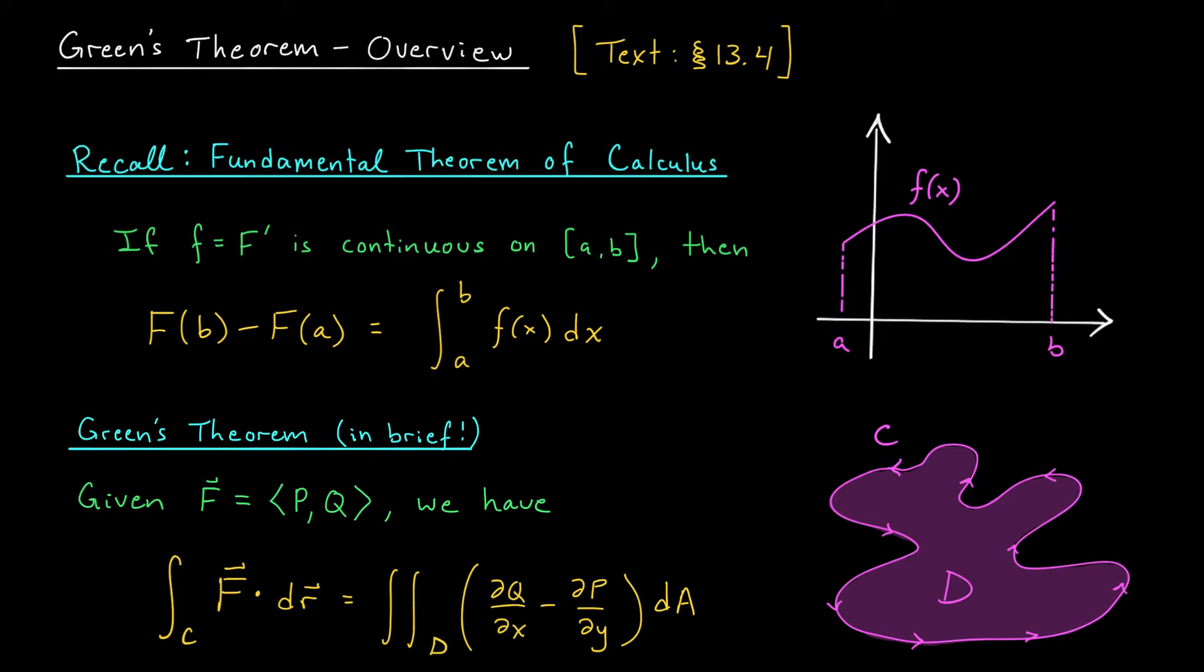Whereas on the right-hand side, its derivative, little f, is being evaluated throughout the interval. That's what this integral is doing. It's taking into account the values of little f throughout this interval. So the fundamental theorem is telling us that there's a connection between the values of our function on the boundary and the values of its derivative on the interior. If you've understood this, you're going to understand the core idea behind Green's theorem.